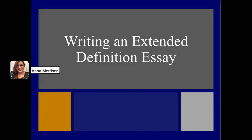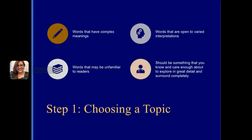Here's how to write an extended definition essay. Step one is choosing a topic. Most of the time, Professor Morrison will provide a list of topics for you to choose from, and you must choose from that list. The list will contain words that have complex meanings, words that are open to varied interpretations, and words that may be unfamiliar to readers — but it should be something that you know and care enough about to explore in great detail.